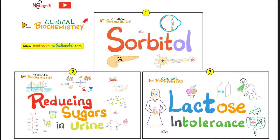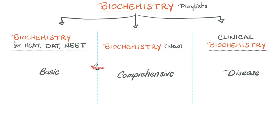In the first video in this playlist, we talked about sorbitol, diabetes, diabetic retinopathy, diabetic neuropathy, and cataracts. Then we talked about why we have reducing sugars in the urine and lactose intolerance. Today, we're talking galactosemia.